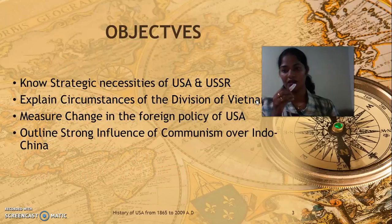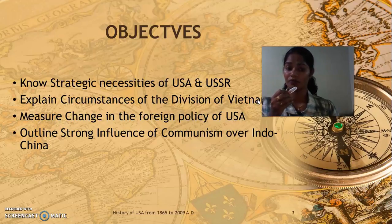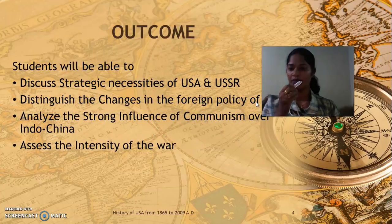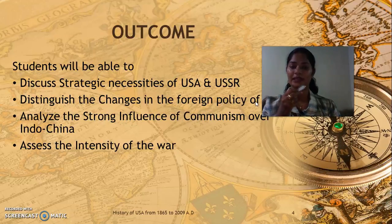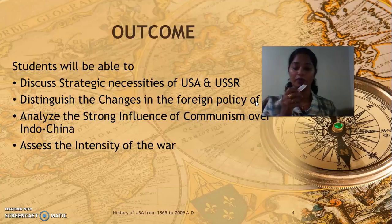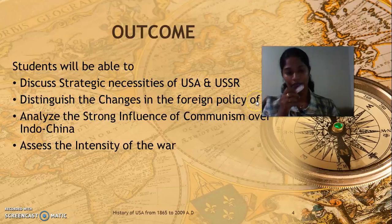The objectives are: to know the strategic necessities of USA and USSR; to explain the circumstances of the division of Vietnam; to measure the change in the foreign policy of USA; and to outline the strong influence of communism over Indochina. The outcomes are: at the end of this lecture, you will be able to discuss the strategic necessities of USA and USSR, distinguish the changes in the foreign policy of USA after the Vietnam War, analyze the strong influence of communism over Indochina by defeating America, and assess the intensity of this Vietnam War.